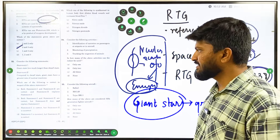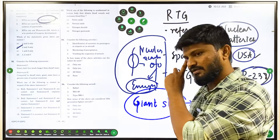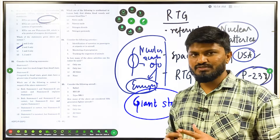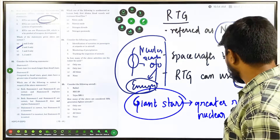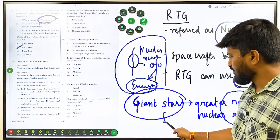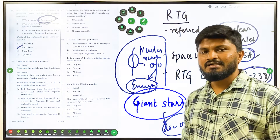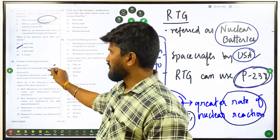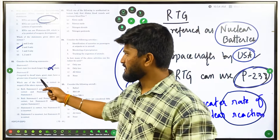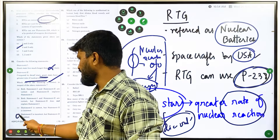Question 32 is a mix of geography and science. Statement 1: giant stars live much longer than dwarf stars — this is wrong. Statement 2: compared to dwarf stars, giant stars have a greater rate of nuclear reactions — this is correct. Giant stars are very large and have faster nuclear reactions, so they burn through their nuclear fuel faster and die out earlier than dwarf stars. The correct answer is D — only statement 2 is correct.